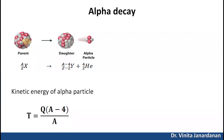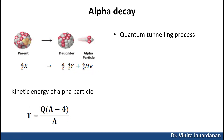The main source of alpha particles is alpha decay. In the decay process, a parent nucleus X is converted to a daughter nucleus Y and an alpha particle is emitted. Alpha decay is fundamentally a quantum tunneling process.